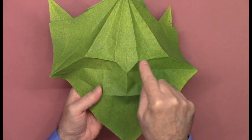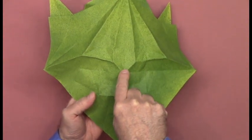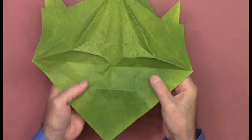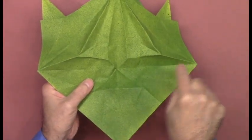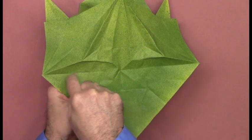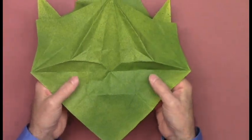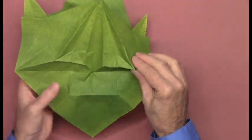This point where all of these creases intersect needs to be pushed in so that the right side valley crease and the left side valley crease will move independently. And this is how it's to work.